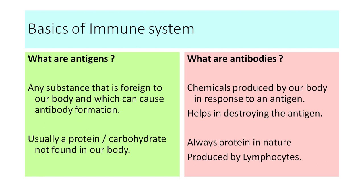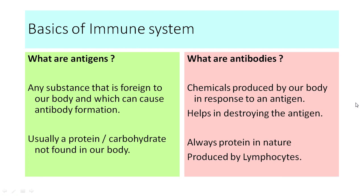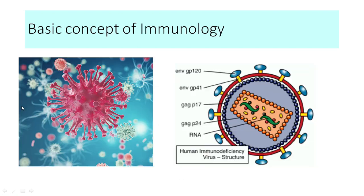Our immune system — consisting of white blood cells, neutrophils, and macrophages — identifies these antigens. The moment they find these antigens do not belong to the human system, they know it is foreign and go out to destroy the bacteria or virus. What are antigens? Any substance that is foreign to our body which can induce antibody formation is called an antigen. These are usually proteins or carbohydrates in nature. Antibodies are chemicals produced by our body in response to an antigen, are proteinaceous in nature, and are produced by lymphocytes.